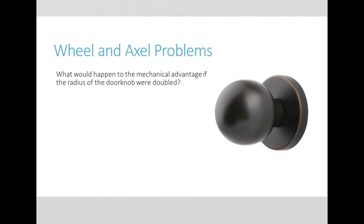What would happen to the mechanical advantage if the radius of the doorknob were doubled? There are two main ways to do this. The way that I usually think of it is, if I have an IMA, it's the radius of my wheel divided by the radius of my axle.